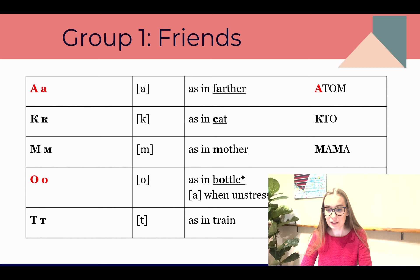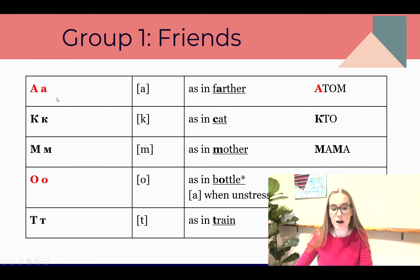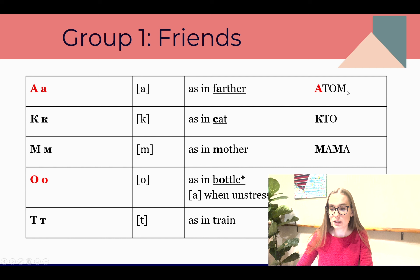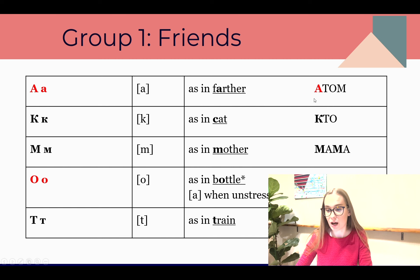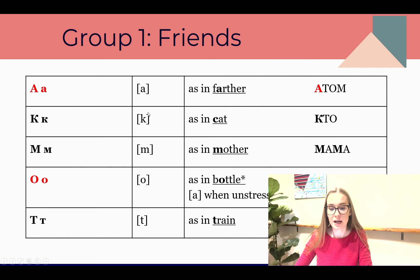The first group I call 'friends,' because these letters are written and sound exactly like in English. Let's start with the letter А. The transcription is 'a,' and we read it as in the word 'father.' Here is a Russian word: атом — atom.